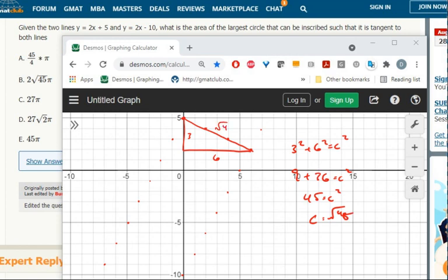So that's the diameter of the circle. The radius is that divided by 2. Then the area would be Pi R squared, so 45 over 4 Pi.